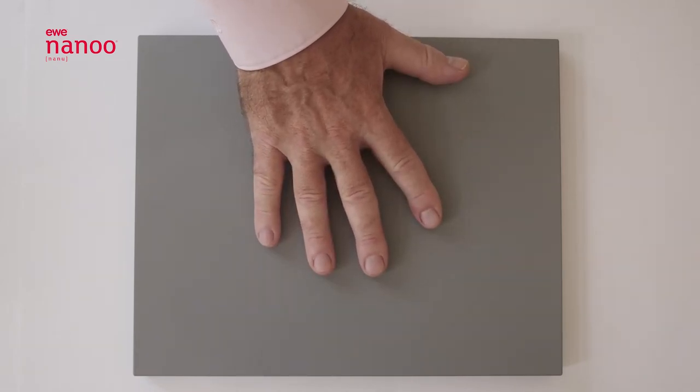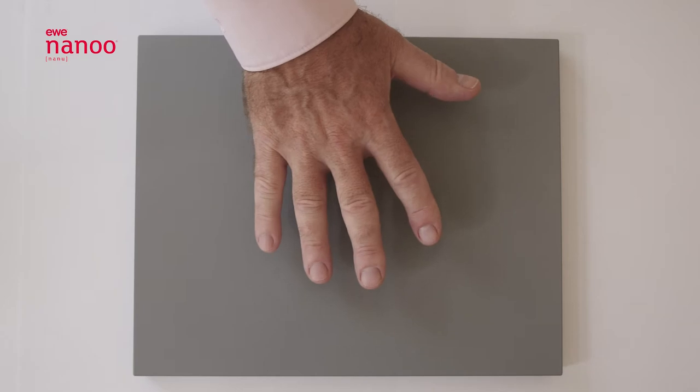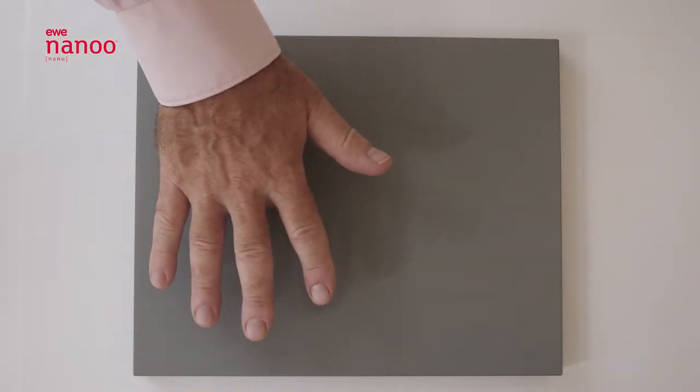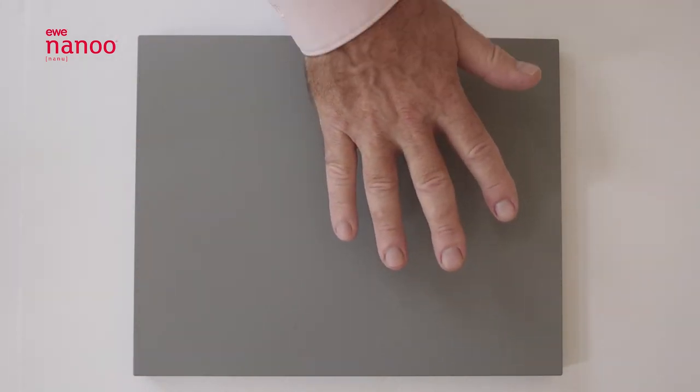EVE NANU is different. Instead of a spray coating, a thin sheet of super matte solid acrylic is applied to the top surface.